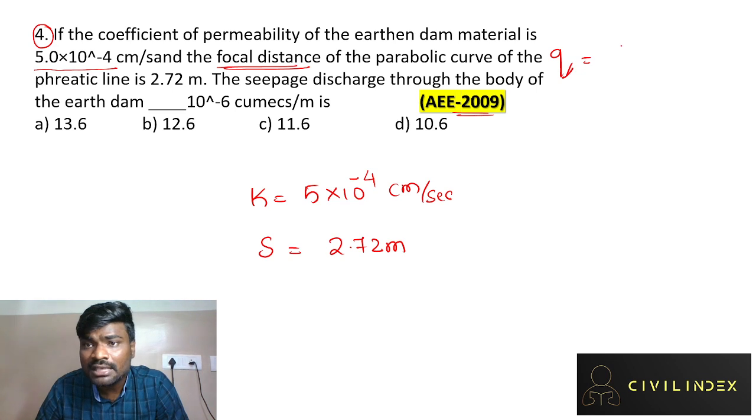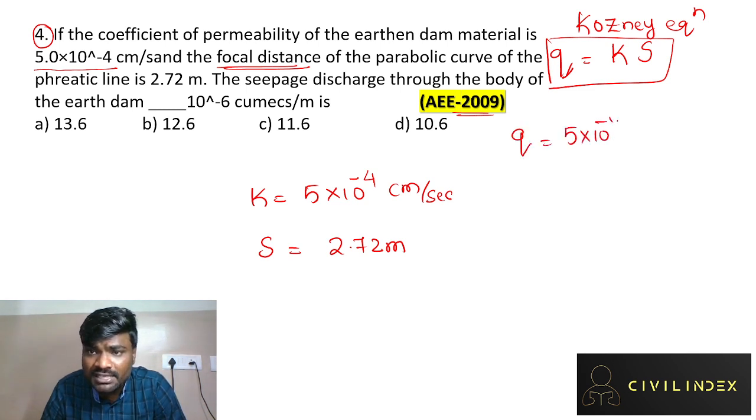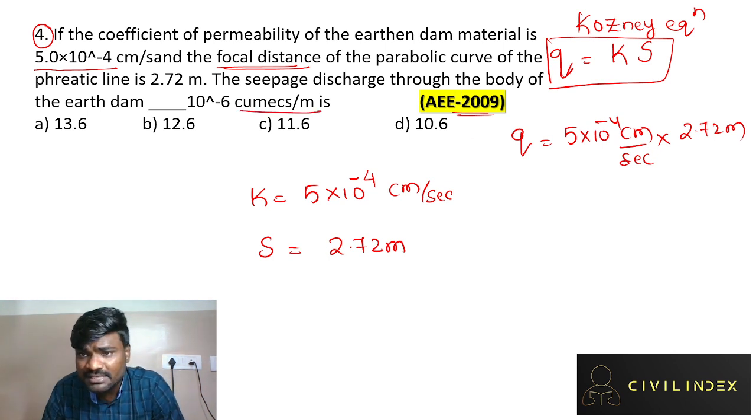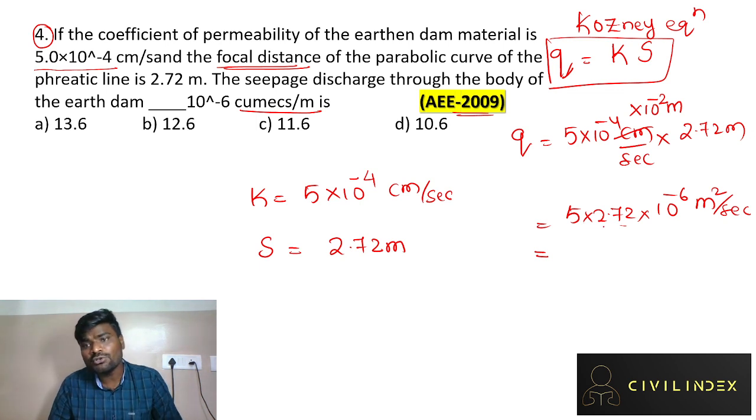In this equation, we have k and s. Please convert centimeter into meters, so k becomes 5 into 10 to the power of minus 4 times 1 by 100, which equals 5 into 10 to the power of minus 6 meters per second. Then we have 5 into 2.72 into 10 to the power of minus 6 meter square per second. 5 into 2.72: 5 into 2 is 10, 5 into 72 is 360, change this, 10 plus 3.6 gives 13.6.